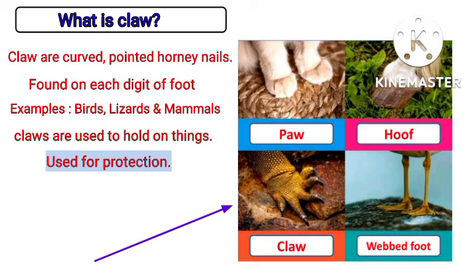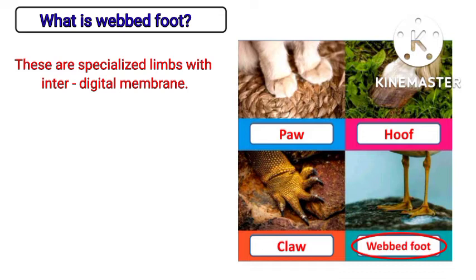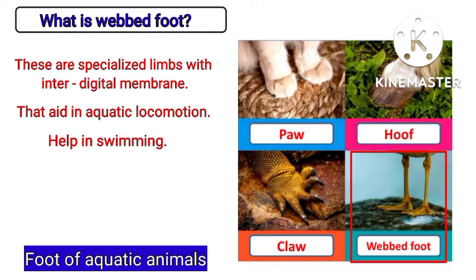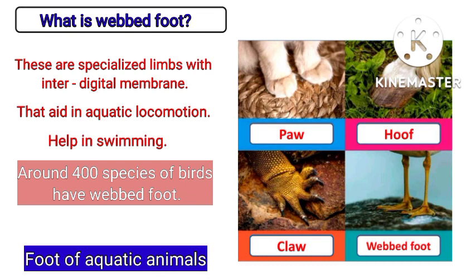What is a webbed foot? Webbed feet are specialized limbs with inter-digital membranes that aid in aquatic locomotion. In simple terms, these toes are connected by skin to help the animal when swimming. An animal has webbed feet if its toes are connected by skin to help it when swimming. Around 400 species of birds have webbed feet.